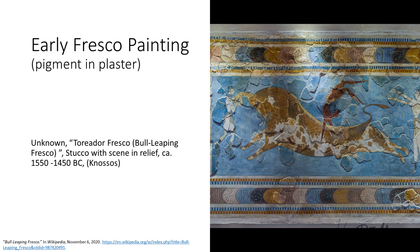During the early Minoan era on the Mediterranean island of Crete, pigments were applied to fresh plaster using water to make frescoes. As the plaster dried, it would set, sealing the pigments in. This image of a toreador celebrates Minoan culture and exhibits their unique style.